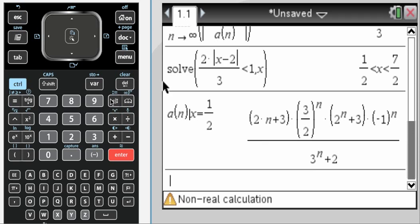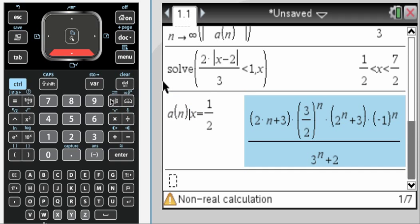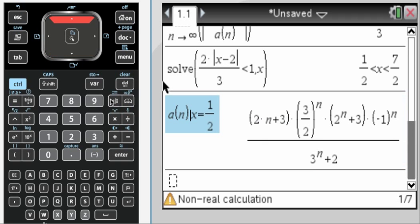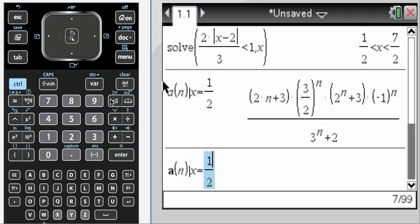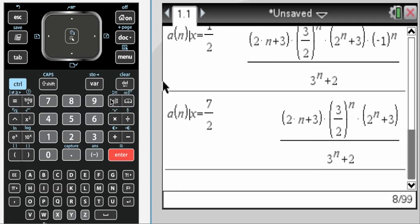And here, a non-real calculation. That is crazy. And I get that, and then I want to test that for convergence. And then here, when it's 7 halves, I get that, and I want to test that for convergence.